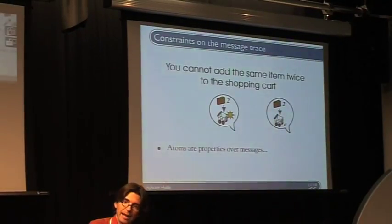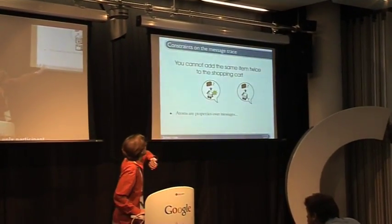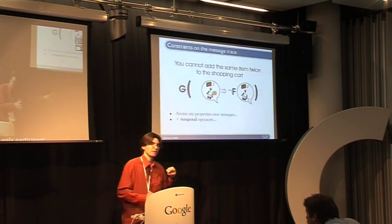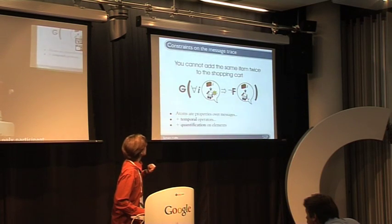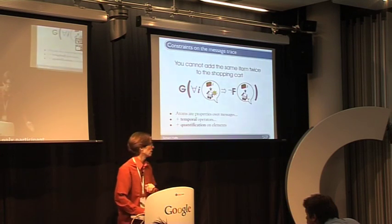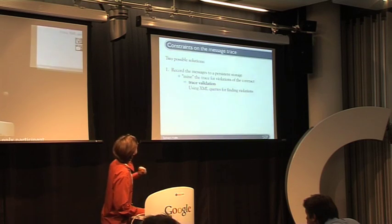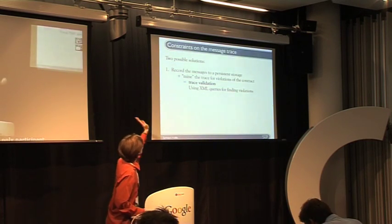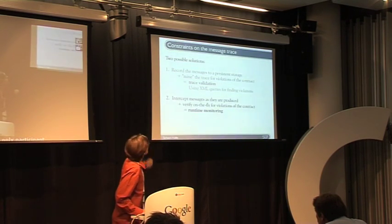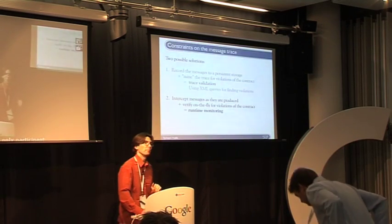We invented a language where you can express these kinds of properties — properties over messages, temporal operators that express something about the sequence of messages, and quantification on elements so you don't need to repeat the same property for all items in Amazon's catalog. It's called LTL FO+. We can record messages to persistent storage and check the trace for violations, or intercept messages as they are produced and raise a flag when something bad happens — this is called runtime monitoring.